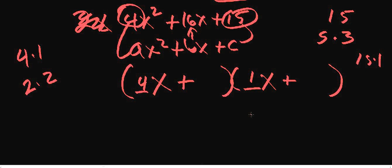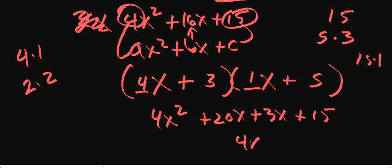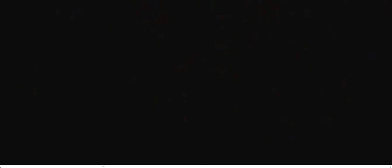One way to do this is with trial and error. We'll put 5 here, 3 here. Let's see what happens. We've got 4x squared, that looks good, plus 20x plus 3x plus 15. Well, that's not going to work because now I have 4x squared plus 23x plus 15.